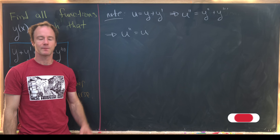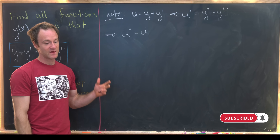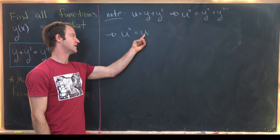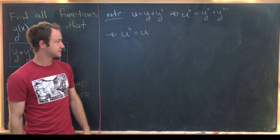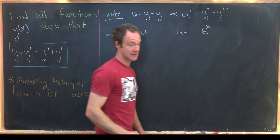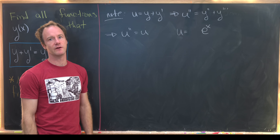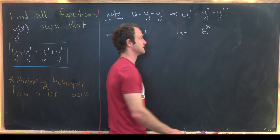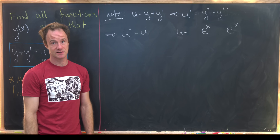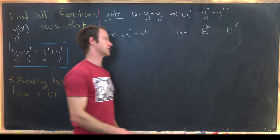Go through the catalog of functions and think about all functions that have the property that when you take their second derivative you get back to themselves. One of those functions is e to the x — because the derivative of e to the x is e to the x, so the second derivative is also e to the x. A related example is e to the minus x, because taking one derivative gives a minus sign but that gets canceled with the second derivative.